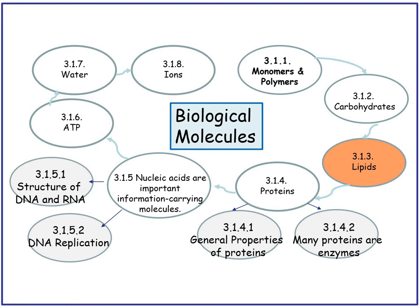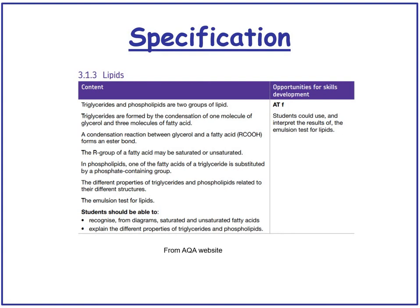We are on 3.1.3 of the A2A syllabus, which is the lipids topic. By the end of the lesson we need to know that triglycerides and phospholipids are two groups of lipids. Triglycerides are formed by the condensation of one molecule of glycerol and three molecules of fatty acids. The condensation reaction between glycerol and fatty acids, which is RQ, forms an ester bond. The R group of fatty acids may be saturated or unsaturated. In phospholipids, one of the fatty acids of the triglyceride is substituted by a phosphate-containing group. You must also know the emulsion test for lipids and be able to recognise saturated and unsaturated fatty acids from diagrams.